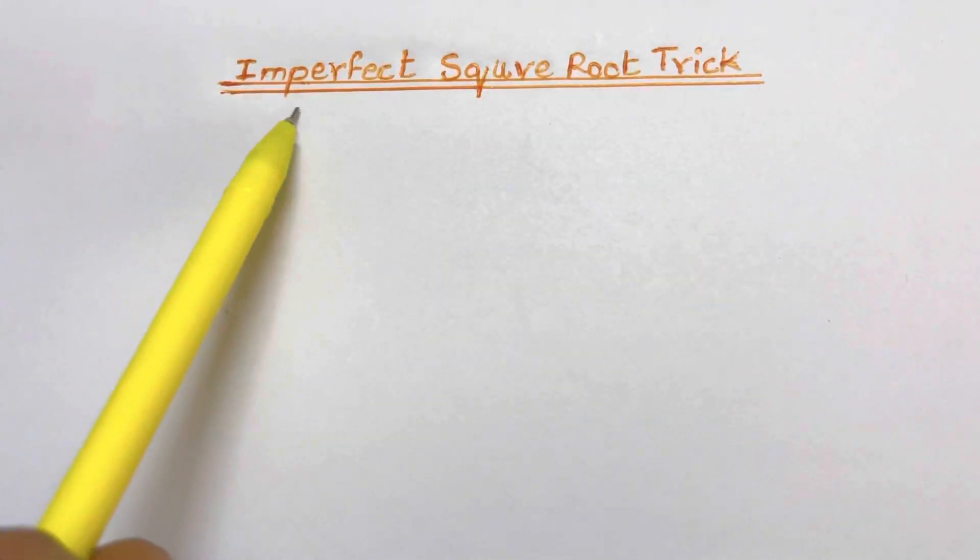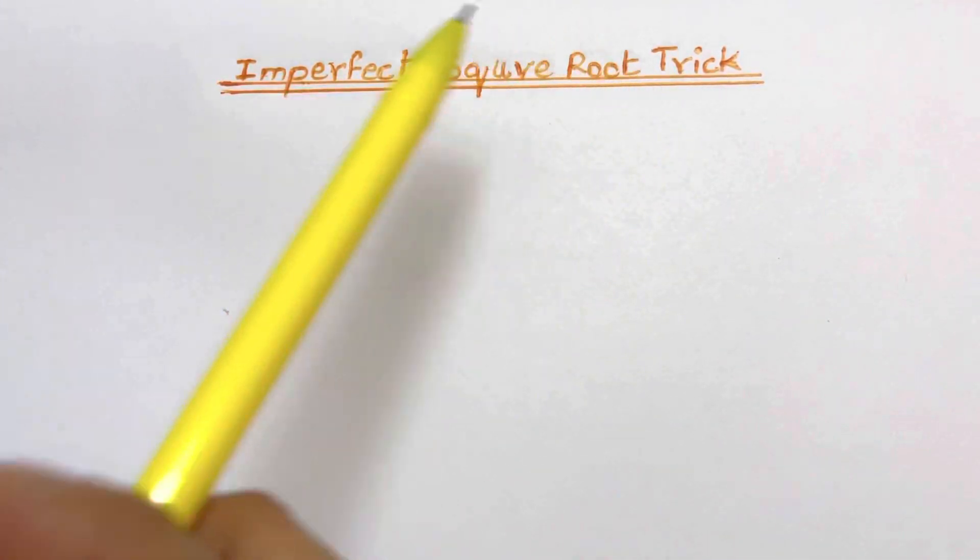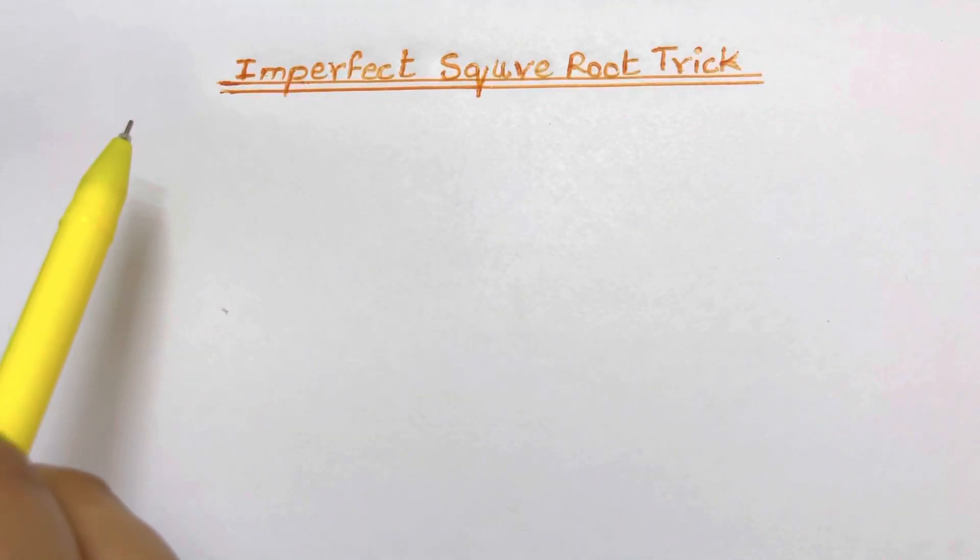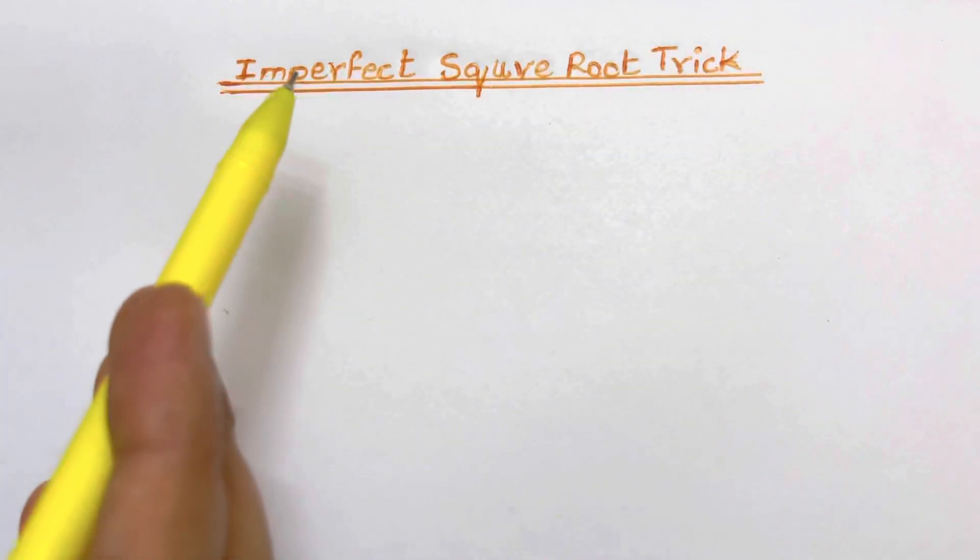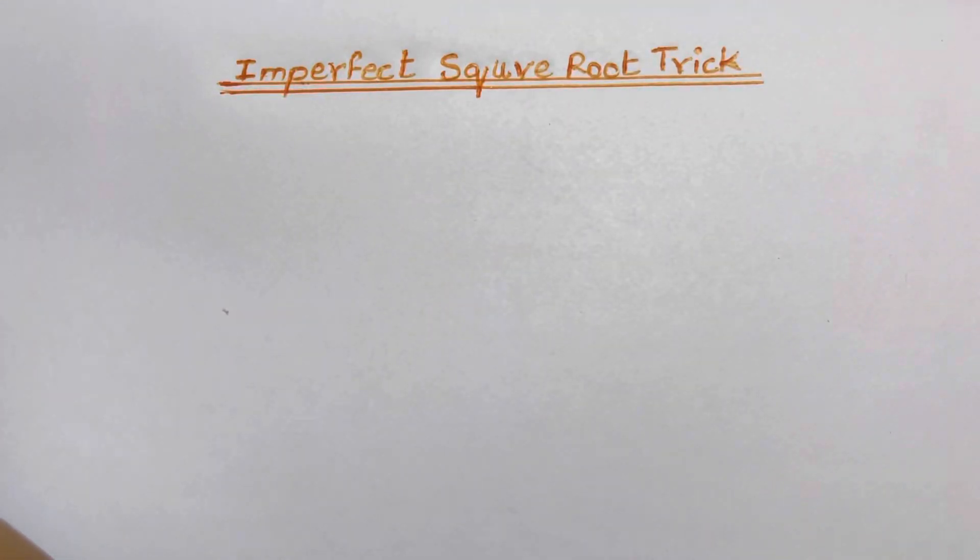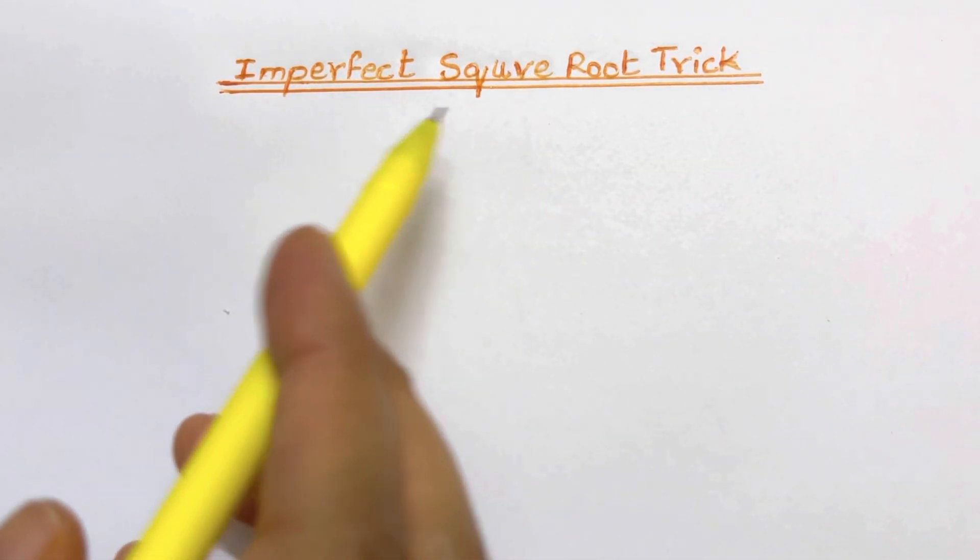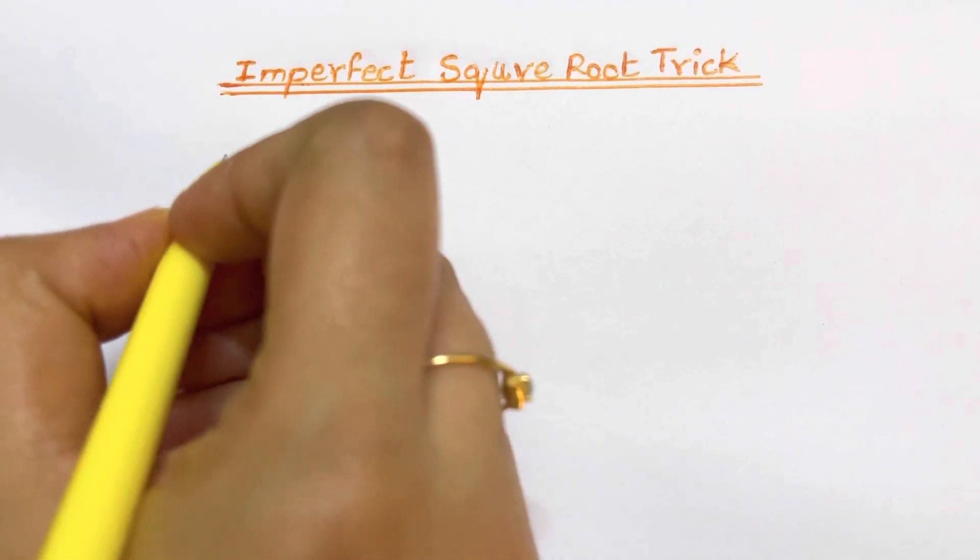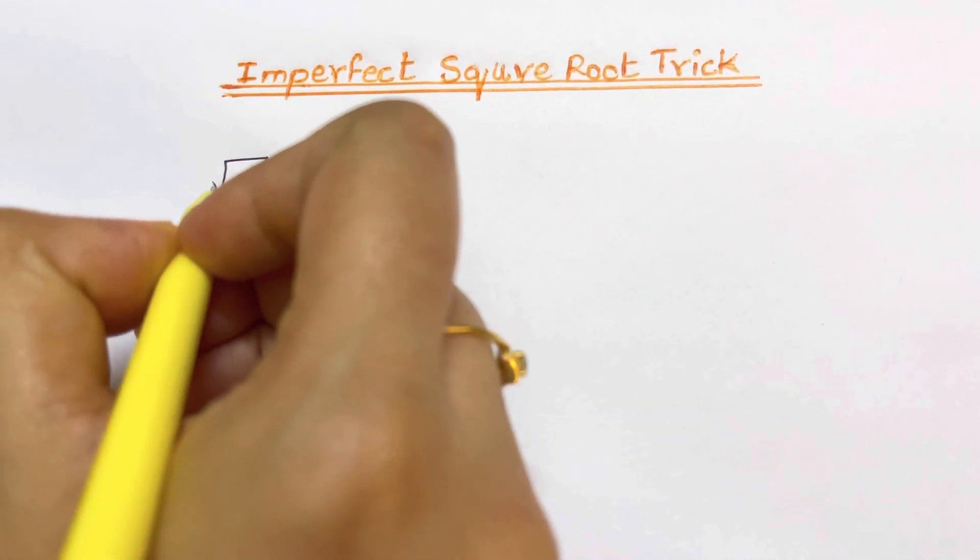In this video you will learn how to find the imperfect square root of any number. Now suppose we have learned in the previous video what is the method to find out the imperfect square root trick. Now let us do it with some examples.